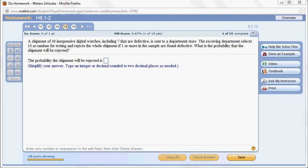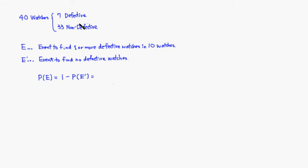Let's go to paper. So here's 40 watches. 7 were defective, which means that 33 are non-defective.